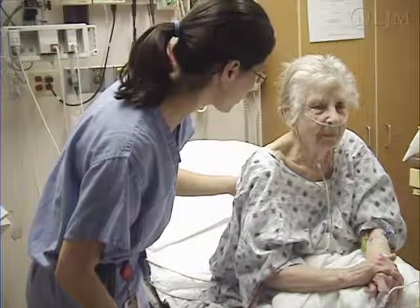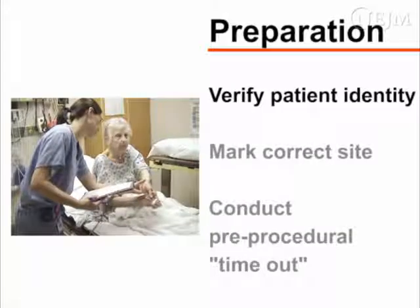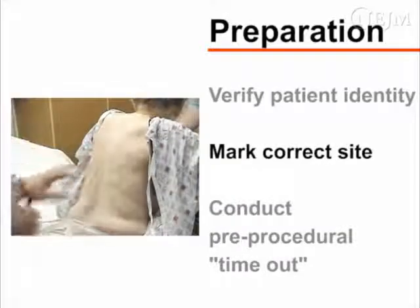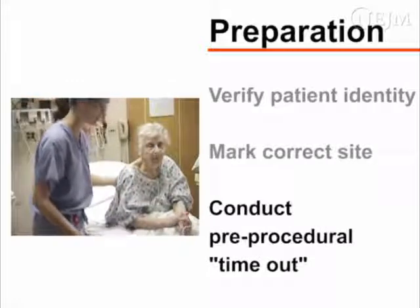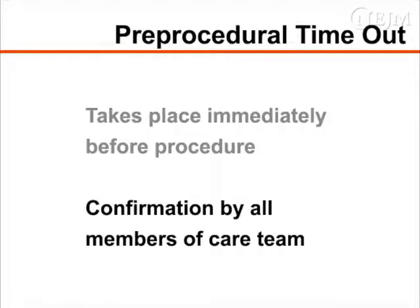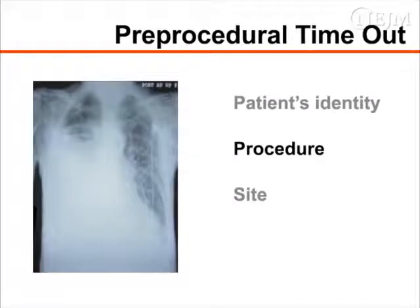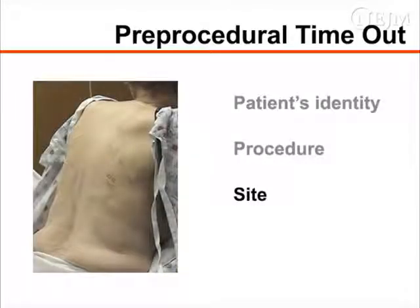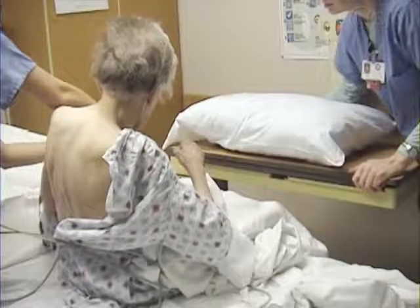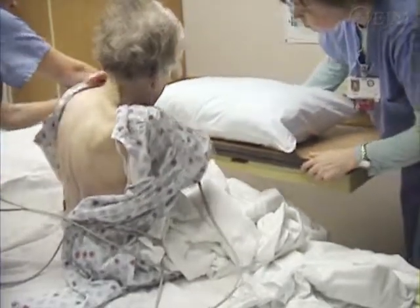Explain the procedure to the patient and obtain written informed consent. You should also verify the patient's identity, mark the correct site, and conduct a pre-procedural timeout. The timeout, which takes place immediately before the procedure is started, consists of confirmation by all members of the care team that the patient's identity, the procedure he or she is to undergo, and the site of the procedure are all correct. You will need an assistant to help position and monitor the patient and assist with the collection of pleural fluid.